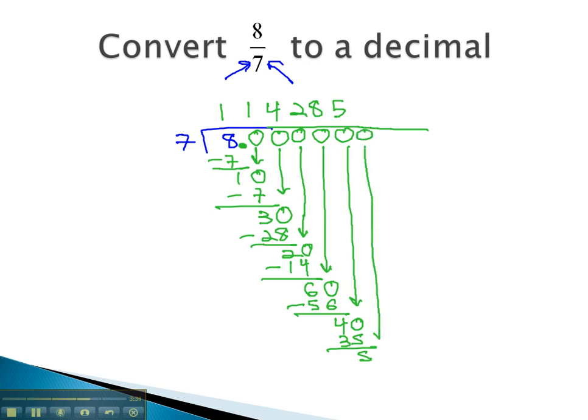Add another 0, bring it down. We have to be getting close, because I'm running out of space. 7 goes into 50 seven times, because 7 times 7 is 49. Subtract, and we get 1.